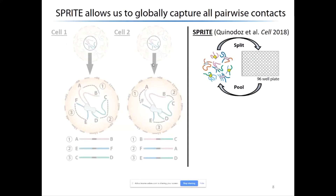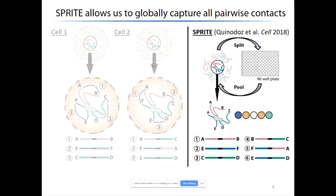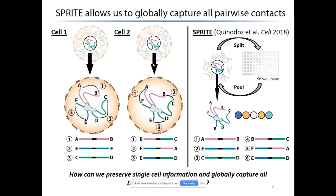Fortunately, our collaborators in Mitch Gomez's lab have developed Sprite to globally capture all of these pairwise contacts, where we split the complexes across a 96-well plate, all DNA molecules associated with the complex receive the same barcode, and we are able to map all corresponding DNA molecules and interactions back to each other. The question we're interested in is how we can preserve cell-specific information so we know where these spatial contacts originate from, and yet globally capture all DNA contacts at the single-cell level.